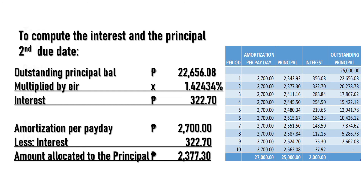As you can see in the table, the total principal collected is 25,000, while the total interest is 2,000 — equivalent to the amount projected using the add-on interest rate: 25,000 multiplied by the add-on rate of 1.6% times the 5-month term, giving a total of 2,000. This is distributed over the entire term of the loan using the effective interest rate in the diminishing balance method, as mandated by Republic Act 3765 or the Truth in Lending Act.